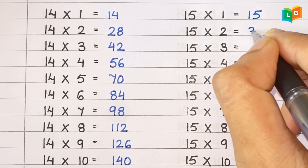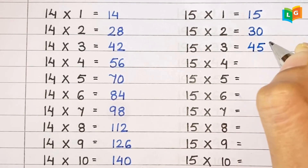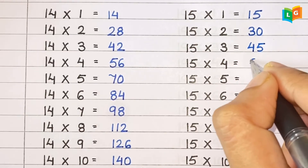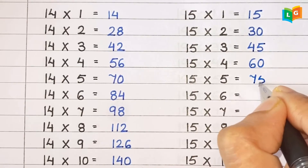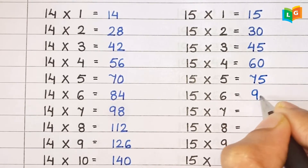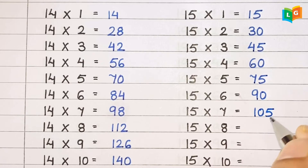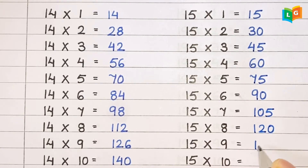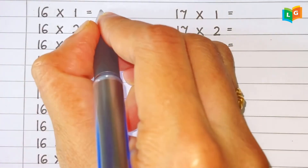Now let's see table of 15. 15 1s are 15, 15 2s are 30, 15 3s are 45, 15 4s are 60, 15 5s are 75, 15 6s are 90, 15 7s are 105, 15 8s are 120, 15 9s are 135, 15 10s are 150.